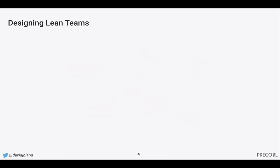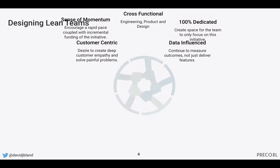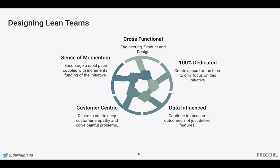Let's pause for a moment before jumping into the exercise to unpack what I mean by teams in this context. The team is cross-functional — that means engineering, product, and design are represented on the team. This makes a lot of sense because the types of assumptions we just covered — desirable, viable, and feasible — each map really well: desirable meaning design, viable meaning product, and feasible meaning engineering.